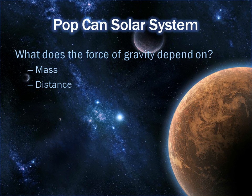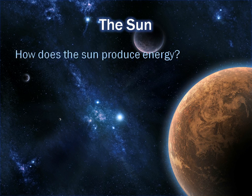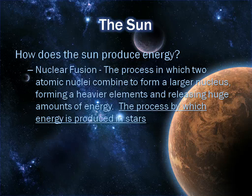The next investigation to take a look at was the sun. There are two topics on there. The first was how does the sun produce energy? That is through nuclear fusion — the process in which two atomic nuclei combine to form a larger nucleus, forming a heavier element and releasing huge amounts of energy. This is the process by which energy is produced in all stars.